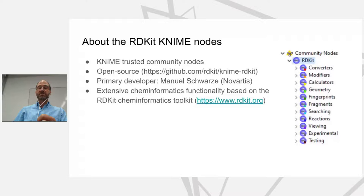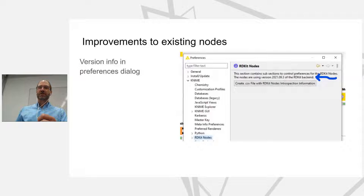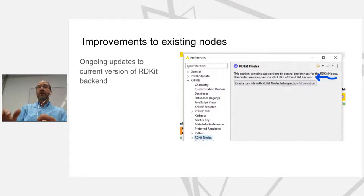So what's new in the nodes? One thing that seems minor but is really super helpful: in the preferences dialog you can now find out which version of the RDKit backend is being used. This is really useful if you want to compare results from KNIME with results from Python or other places using RDKit — as long as you're using the same version of the backend you should get exactly the same results. We are also keeping that backend up to date; every couple of months when there's a new RDKit version we push out an update.